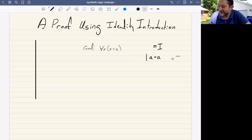I had left that off here. So you would need to cite identity introduction. But identity introduction is taken to be, or what you derive from identity introduction is taken to be, a self-evident truth. So we don't need to cite any premises to derive this thing.